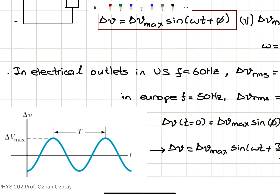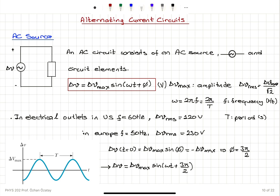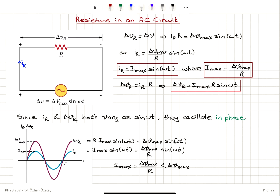Looking at a sinusoidal voltage curve, at t = 0 we are at −ΔV_max, which corresponds to a non-zero φ value — this is an initial phase. The period is measured between two maxima or two minima; it is the completion of one full cycle. For this example, when ΔV at t = 0 is −ΔV_max, the initial phase should be 3π/2 (or 270°). So the corresponding voltage wave is ΔV_max sin(ωt + 3π/2).